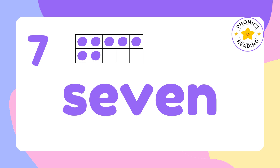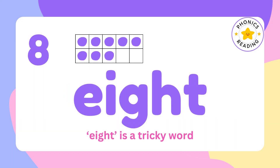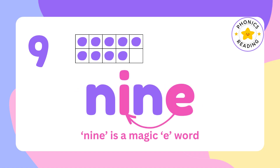No digraph, nothing. 8 is a tricky word. We learn it as E-I-G-H-T: 8. 9 is again a magic-I keyword — N-I-N-E: 9. I and E are making the I sound.